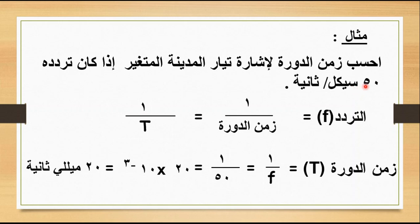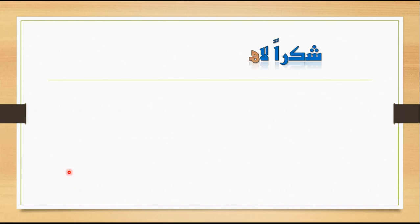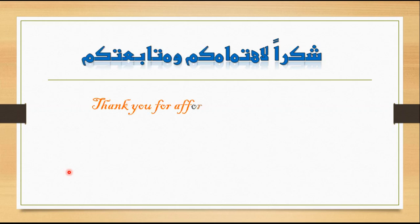ممكن أقول لك نفس الرقم خمسين كيلو سايكل على الثانية، هيطلع عشرين ميلي ولا عشرين مايكرو؟ خلوا بالكم من الوحدات، الكلام ده ممكن يعمل لخبطة عند البعض، لكن الموضوع سهل وبسيط بإذن الله. وبكده تكون انتهت محاضرة اليوم، شاكر ليكم، والى اللقاء في محاضرة قادمة بإذن الله.